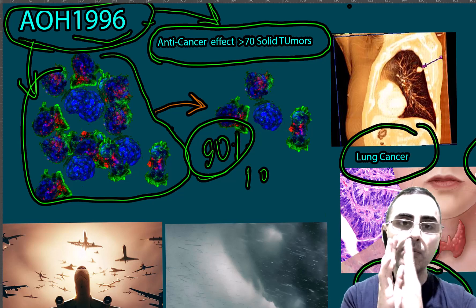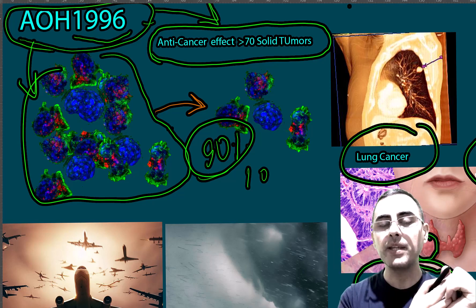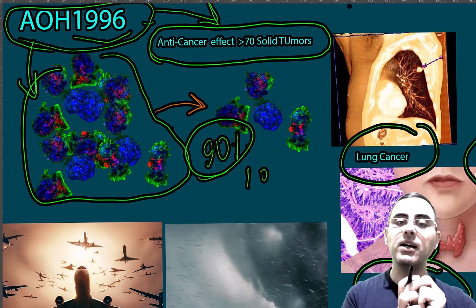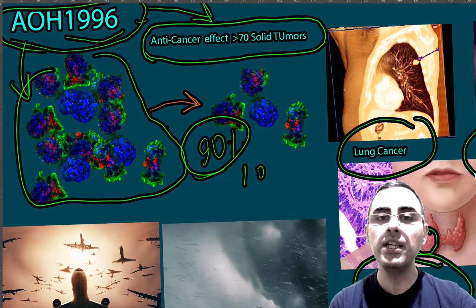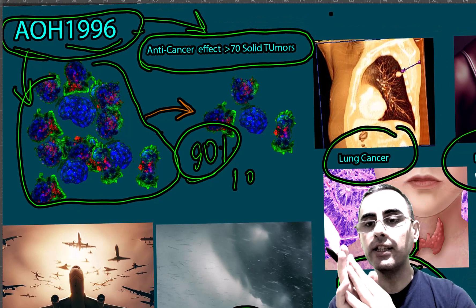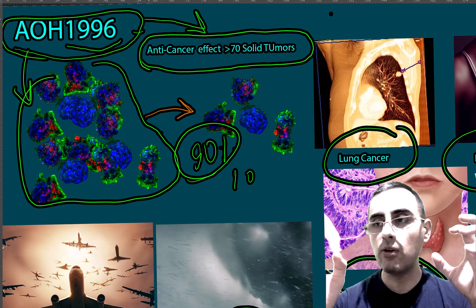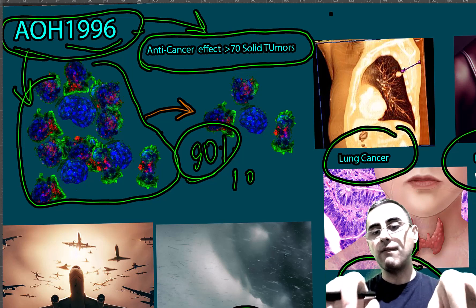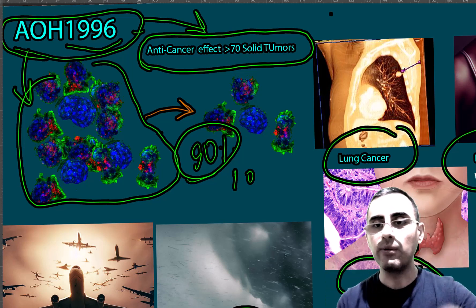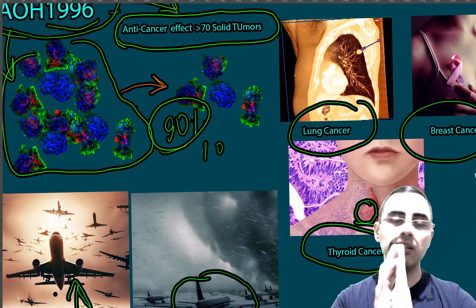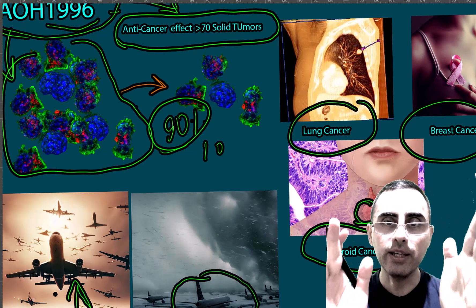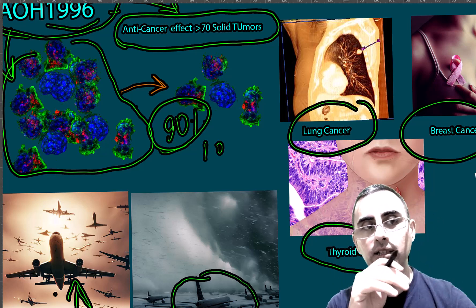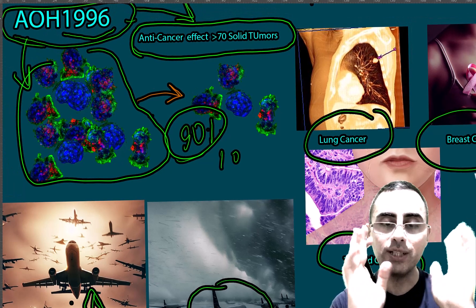After Phase 1, if results are positive, Phase 2 will assess the drug's efficacy in humans. Phase 3 will assess both efficacy and safety, comparing AOH-1996 to traditional treatments. If everything goes well, it may still take several years before this drug becomes available — but the early signals are really promising and that is what makes this important.